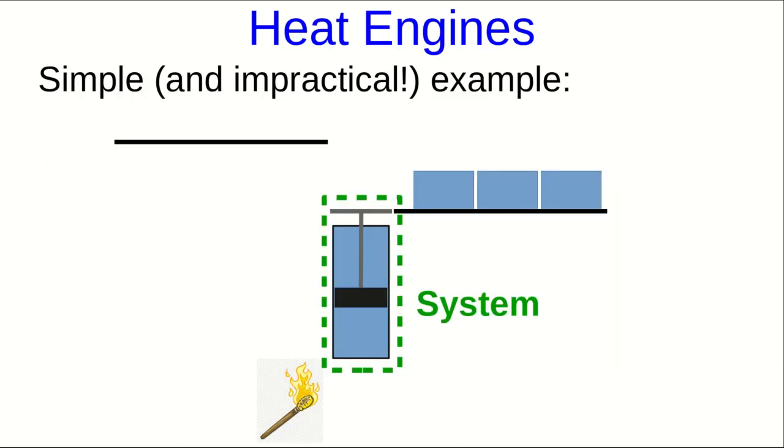Now we're ready to see the basic idea of a heat engine. And to do so, let's look at a simple but very impractical example of a heat engine. So, suppose we have a piston. The gases inside the piston and the piston itself will be our system. And we're going to see how we can use this piston to do some work. We're going to raise some boxes from one floor of a building to another floor of a building.